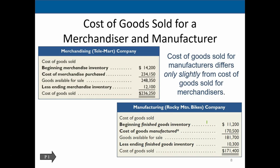Comparing merchandiser and manufacturer side by side: the merchandiser uses beginning merchandise inventory plus cost of merchandise purchased to get goods available for sale, minus ending inventory equals cost of goods sold. For the manufacturer, we use beginning finished goods inventory plus cost of goods manufactured — not what we bought in raw material, but what was completed and available for sale — minus ending finished goods inventory to get cost of goods sold. We'll need to calculate cost of goods manufactured separately.